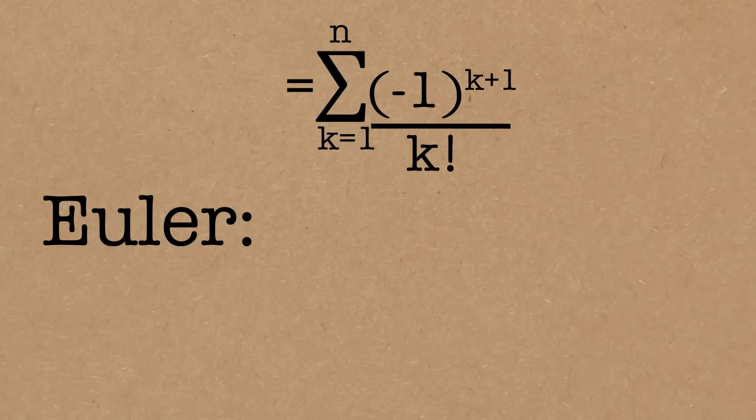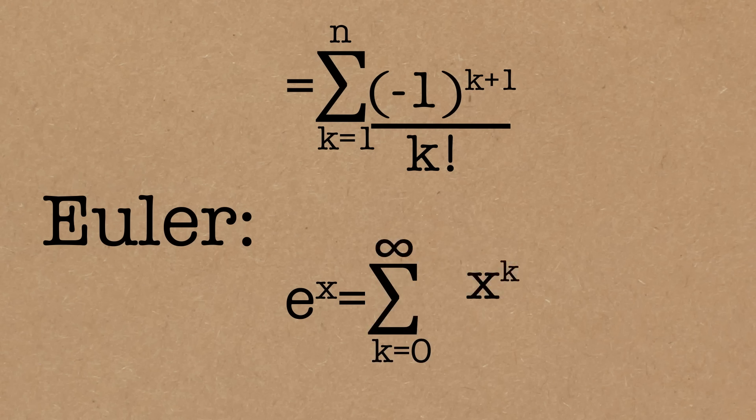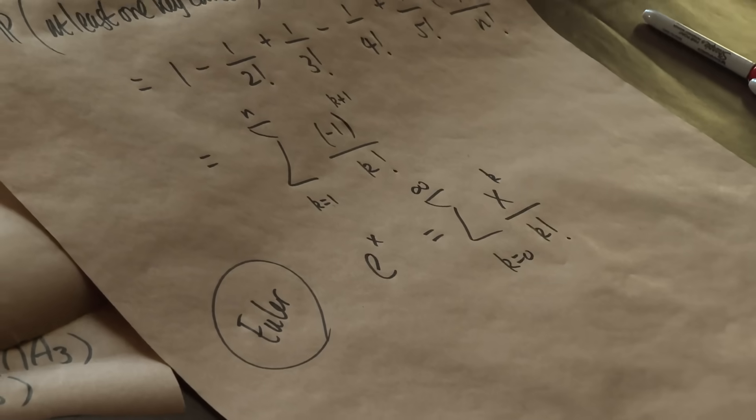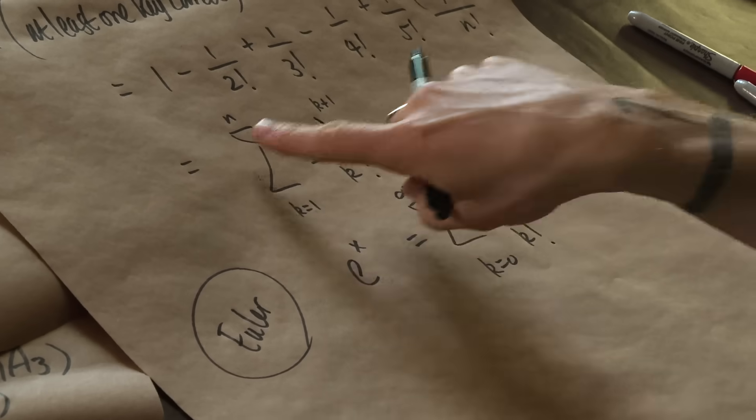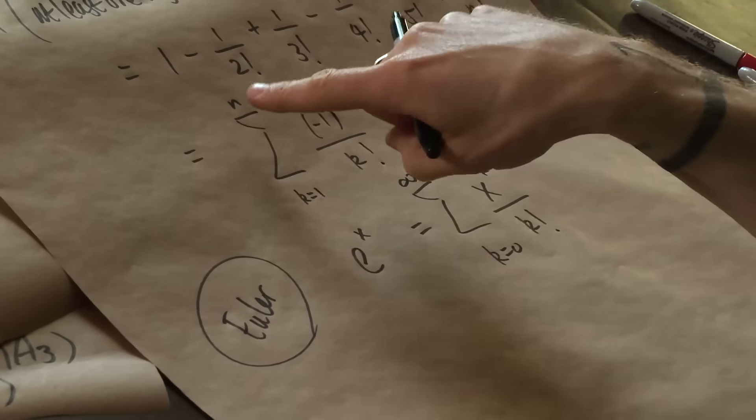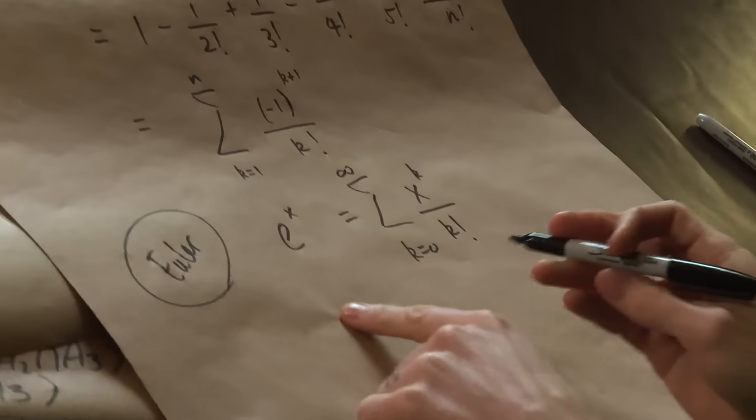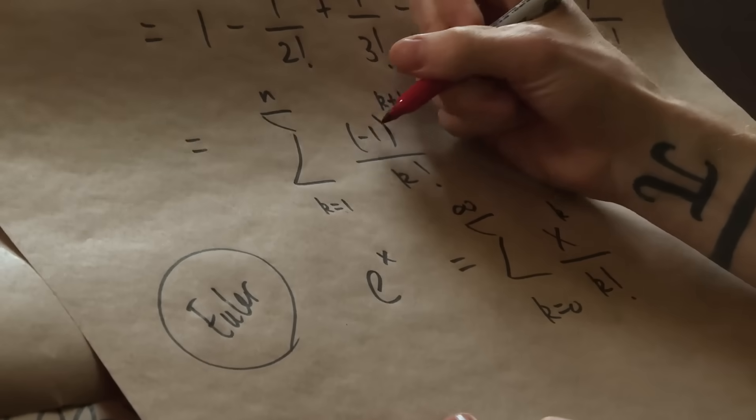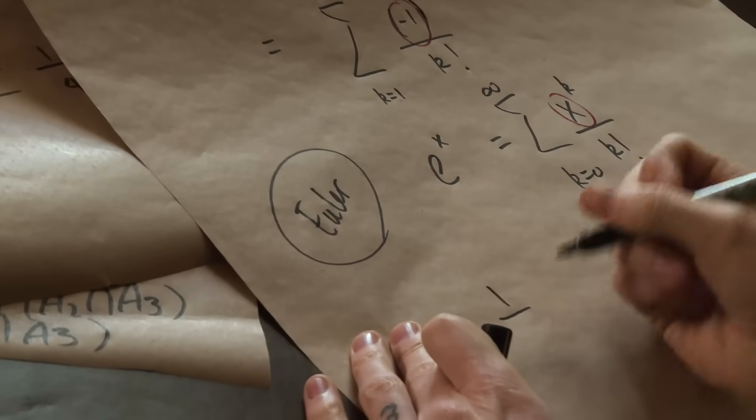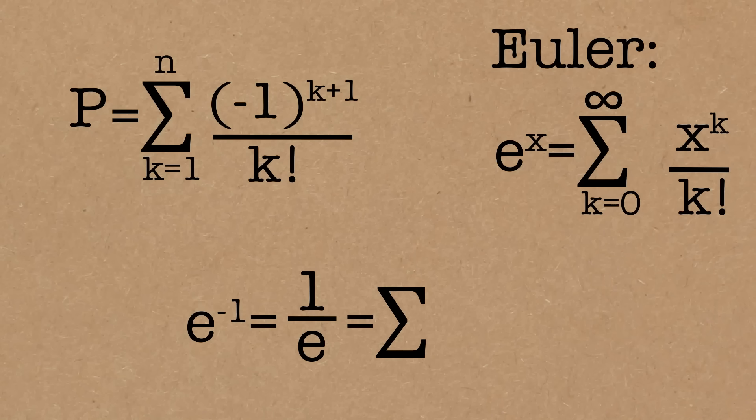We're going to borrow from Euler. Euler showed us that e to the power of x can be written as the sum from k equals naught to infinity of x to the power k over k factorial. This is very close to what we've got. If we compare the exponential to what we've got, this is going to be our x. It's minus 1. So what we've got here is e to the minus 1, which is 1 over e, is the sum from naught to infinity of minus 1 to the k over k factorial.